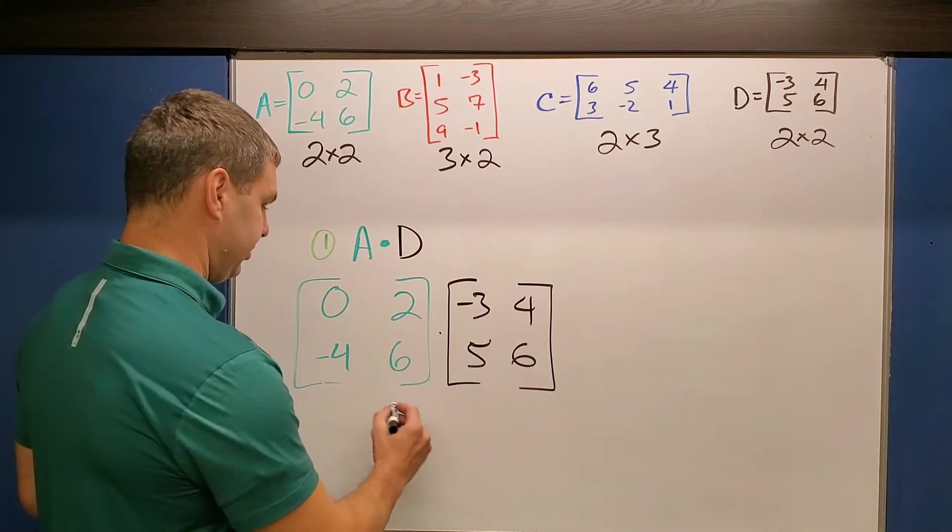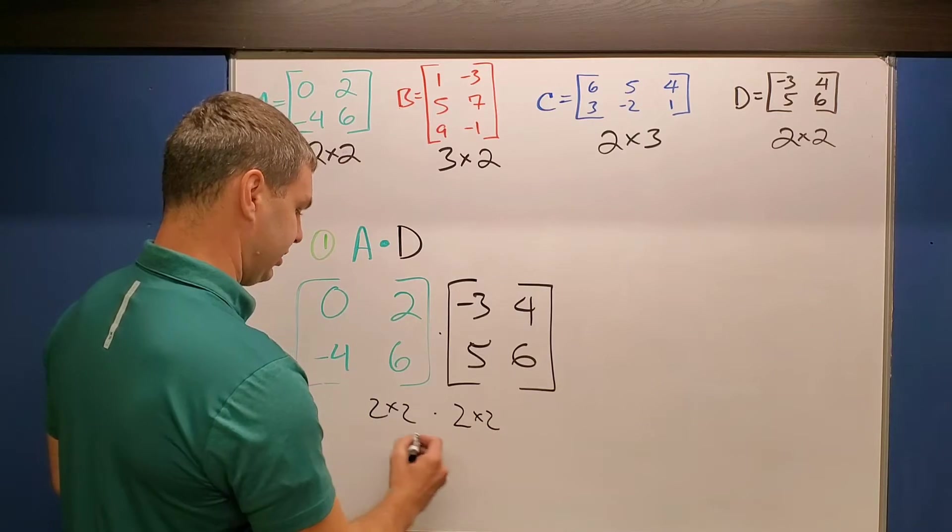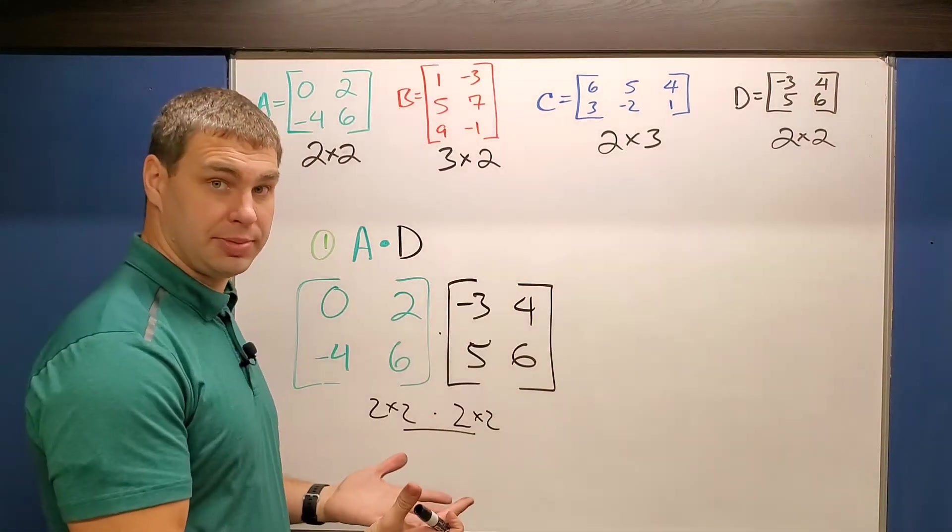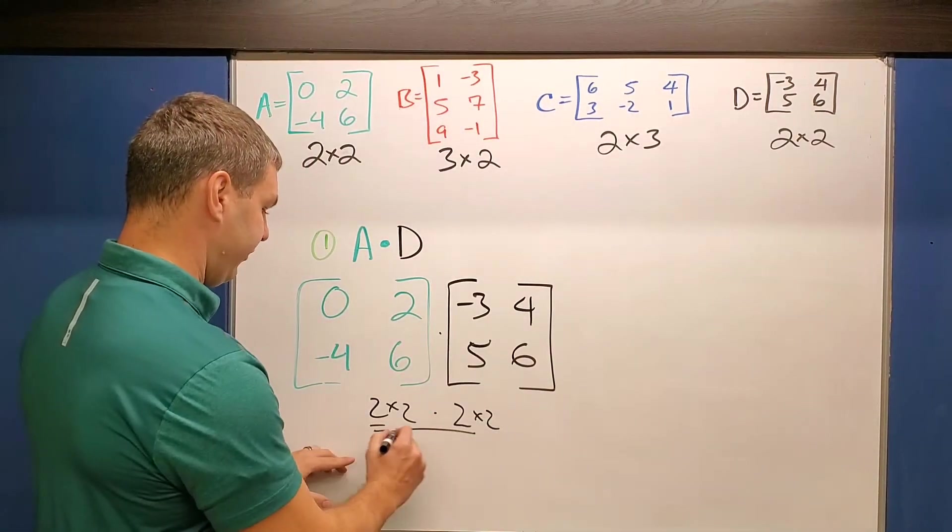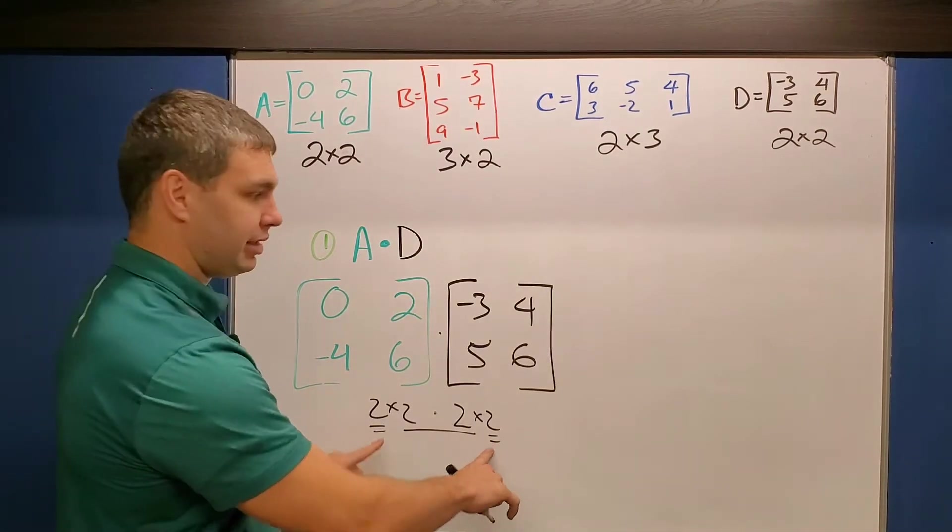First off, we know we are able to multiply these because a 2×2 matrix times a 2×2 matrix, the middle numbers match up that tells us we're allowed to multiply those together, as well as the final dimension of our new one is going to be the outside of 2×2, those outside numbers there.